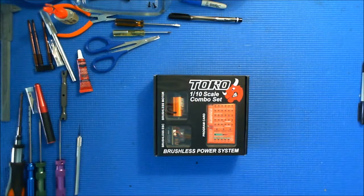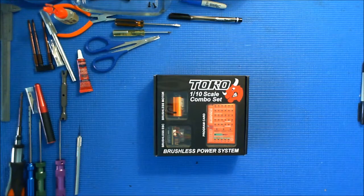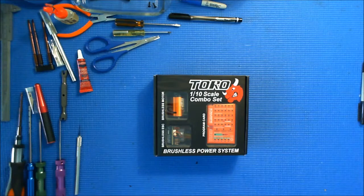Hi this is CJ with Comprcc.com and in this video I'm unboxing a SkyRC Toro combo with a 17.5 turn 1870 KV Ares sensor brushless motor and a 120 amp electronic speed controller.